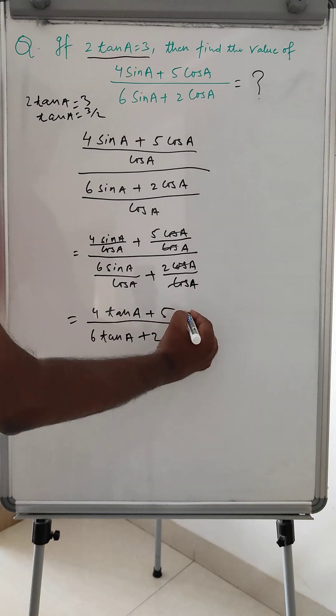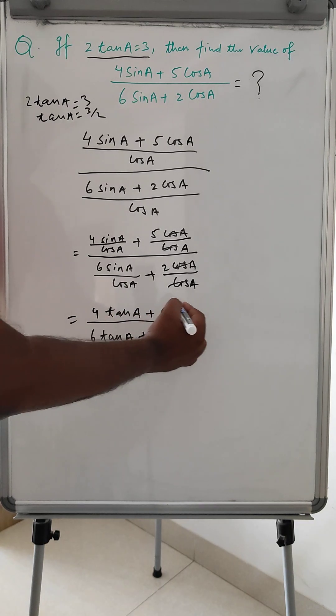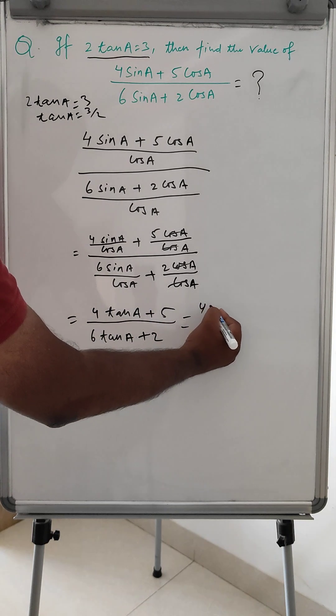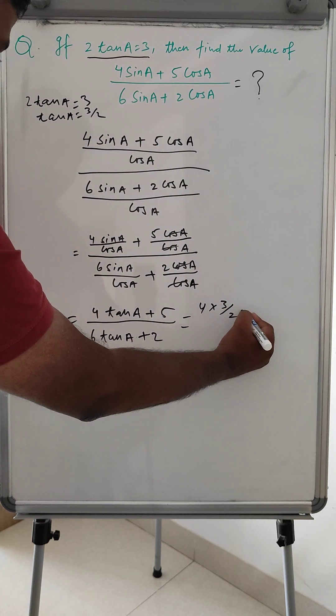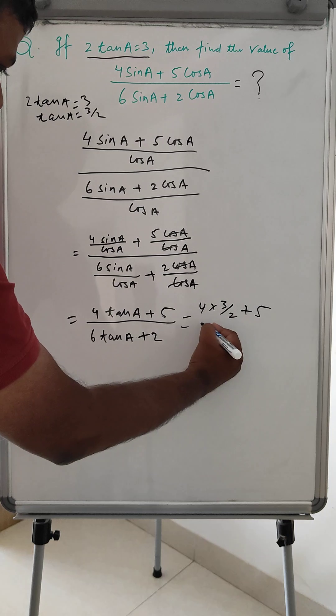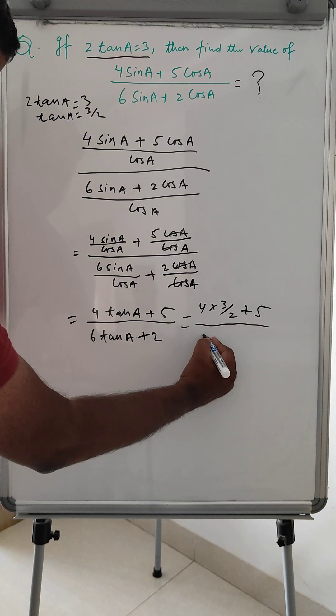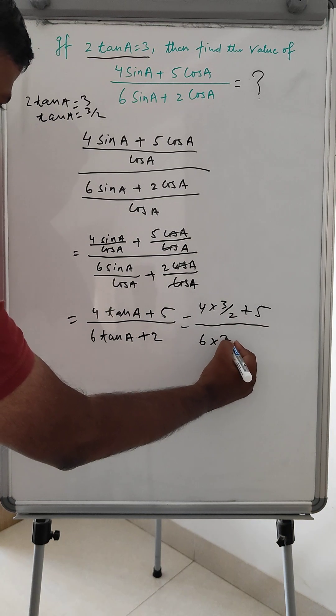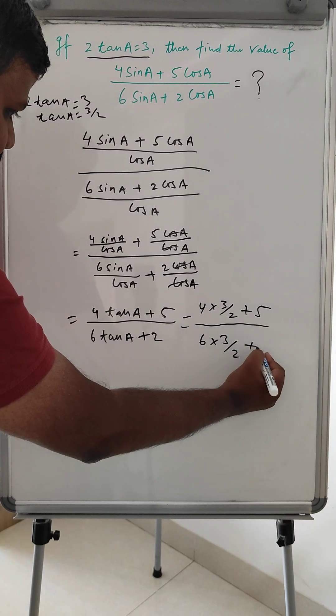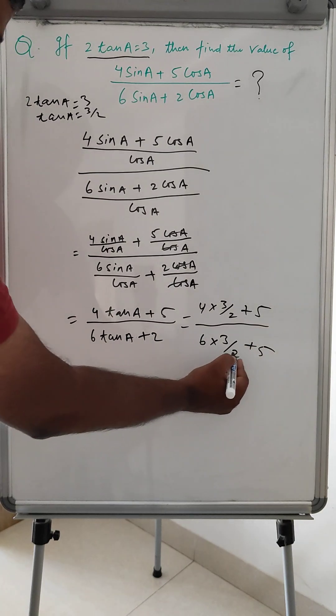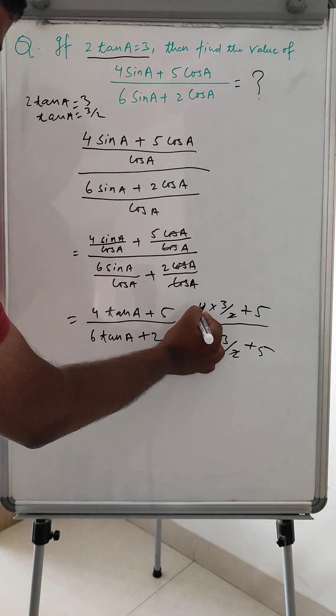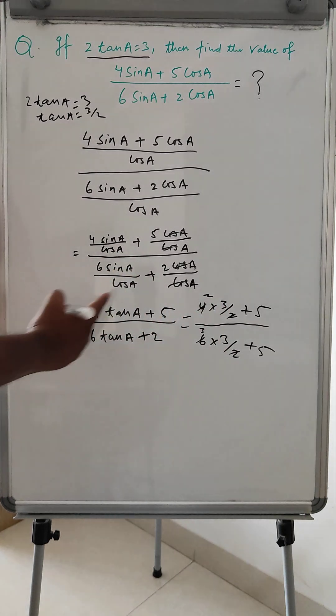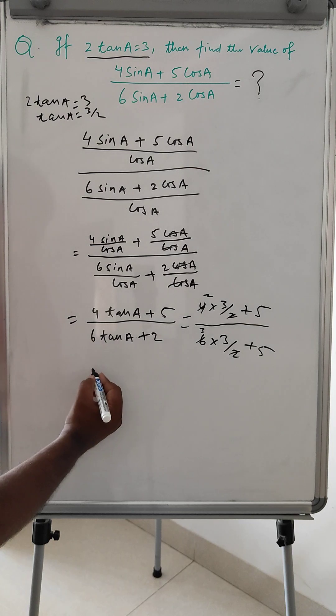So we can put the value of tan A. So 4 times 3 by 2, which is 3 by 2 plus 5. This 3, this 2. So 6 plus 5.